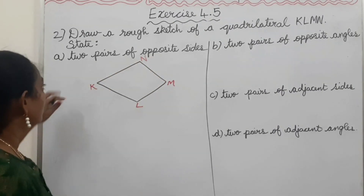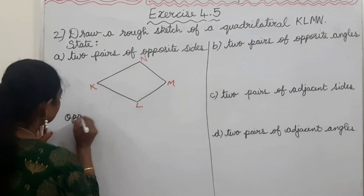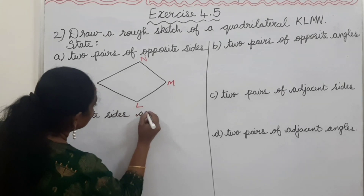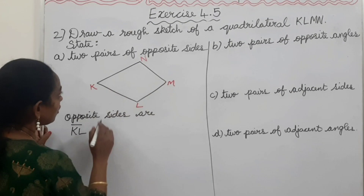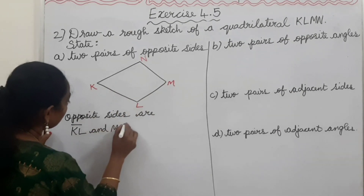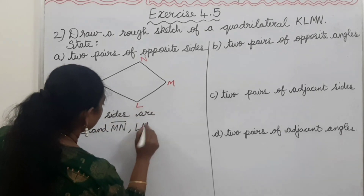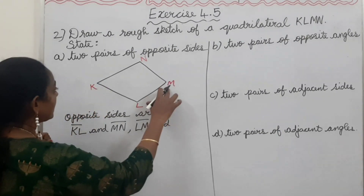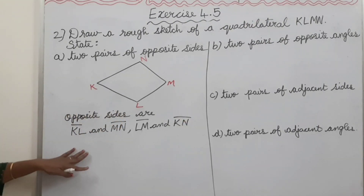Two pairs of opposite sides likhna hai. Opposite sides are: KL and MN — ye ek pair hai. Doosra pair: LM and NK. So the two pairs of opposite sides are KL & MN, and LM & NK.